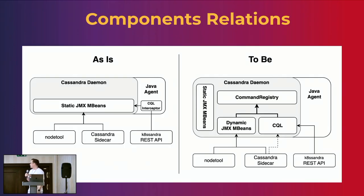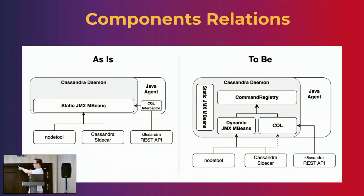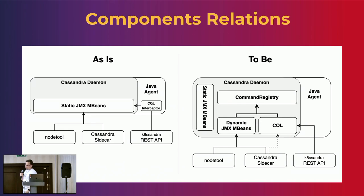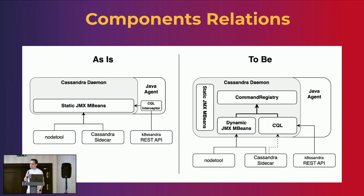We have to support some new binary operations via the binary protocol. In general, the SQL command exporter should handle the commands received via the binary protocol. Currently, nodetool, Cassandra sidecar, and other REST API subprojects all use the static MBeans that the Cassandra node provides. The new design has the same static MBeans alongside the command registry with newly generated dynamic MBeans, plus improvements in binary protocol so we can use these dynamic MBeans with nodetool to preserve backward compatibility. Potentially, Cassandra sidecar and other subprojects can use CQL to execute commands via the SQL protocol.